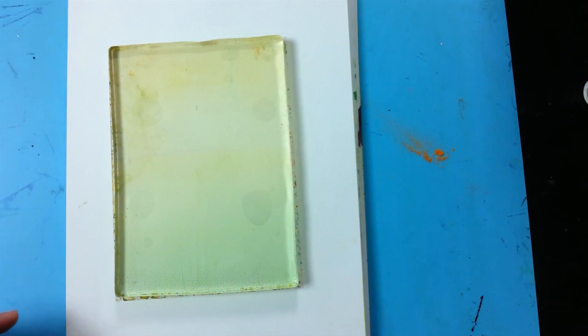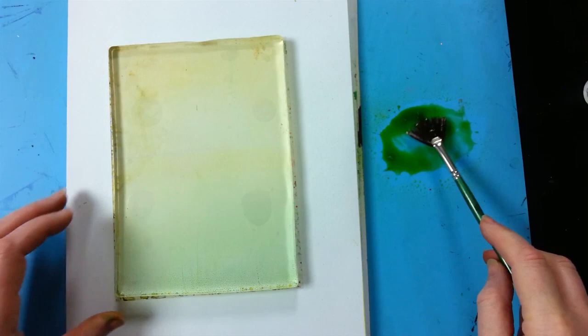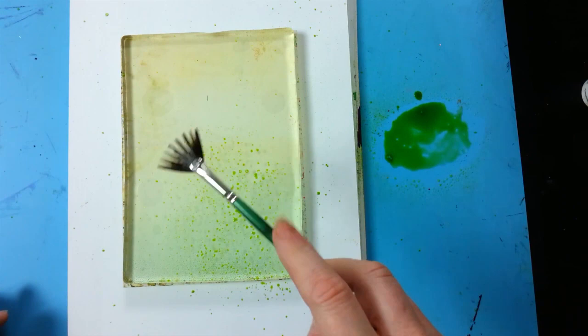So taking the lime green to start with I'm just going to pop a little on my mat. If you want to use a palette that's fine. I'm just sort of getting messy here as I do. Okay fan brush and then we're just going to start spattering a little bit of color onto the jelly plate over the top.